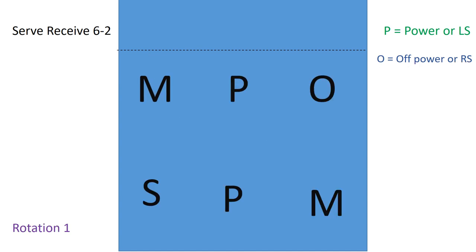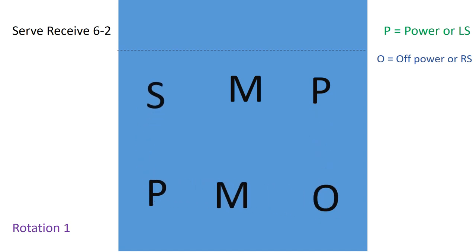Now we're going to get ready for our first rotation. So we'll go ahead, all the players are moving. Now one thing I have to point out here is that our setter from the previous rotation is now in the front row. And our off power is now in the back row.